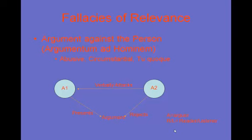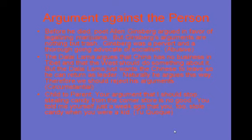Generally, in the argument against the person, there is an arguer who will attack a second arguer. Here is an example of the abusive form: 'Before he died, poet Allen Ginsberg argued in favor of legalizing marijuana. But Ginsberg's arguments are nothing but trash. Ginsberg was a pervert and a thoroughgoing advocate of socialism.' You can see that the argument itself about legalizing marijuana is completely ignored. What is not ignored is the character of Ginsberg, but this has nothing to do with the argument and accepting Ginsberg's conclusion.